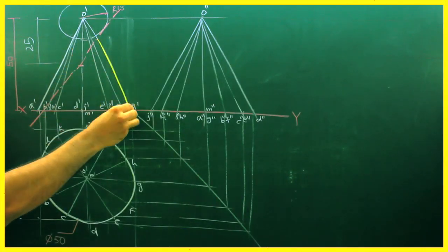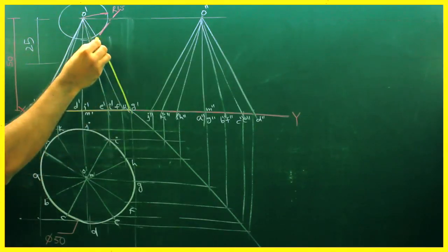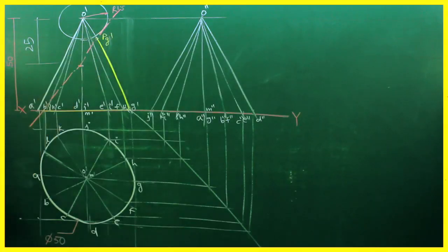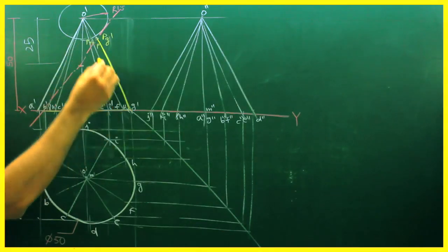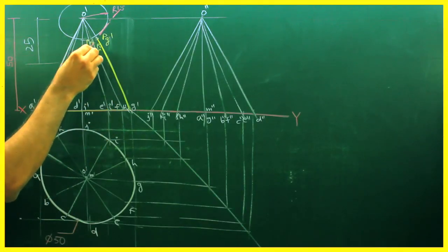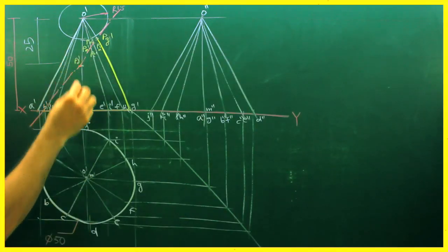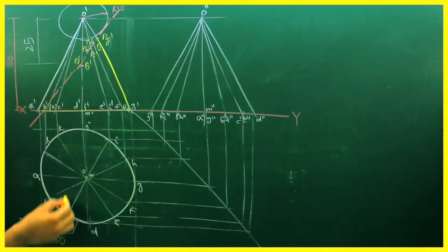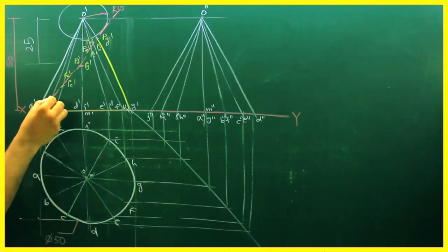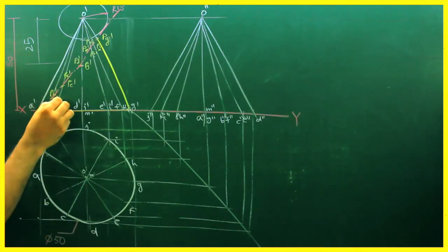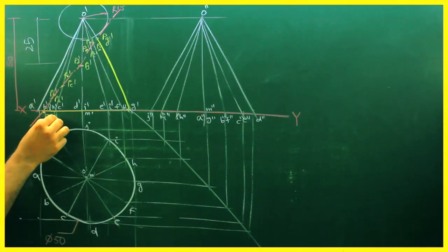Now we will see how many points we got. From O' we get point PG'. Same way O' gives PF' and PH'. Then point PD' and PI'. Same way PD' and PG', then PC' and PK', then PP' and PL'. We also got base points PU' and PG'.